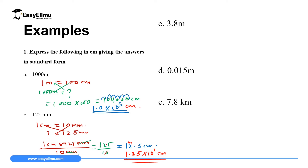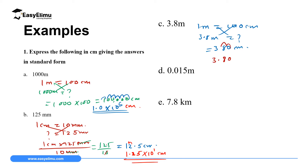Question C: Express 3.8 meters in centimeters and write in standard form. Since 1 meter equals 100 centimeters, 3.8 meters equals 3.8 times 100, which is 380 centimeters. To write in standard form, we move the decimal point back 1, 2 places, giving 3.80 times 10 raised to power 2 centimeters.